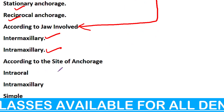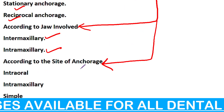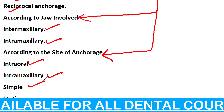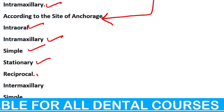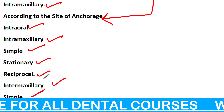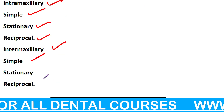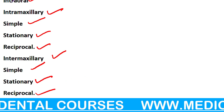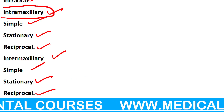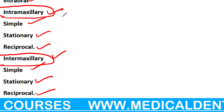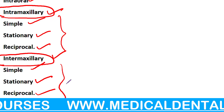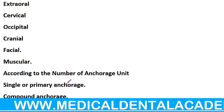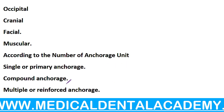फिर site के according: Intraoral है, Intramaxillary है — Simple है, Stationary है, Reciprocal है। Intermaxillary — Simple, Stationary और Reciprocal। इसके अंदर भी दो classification हैं: Intramaxillary और Intermaxillary — इसके अंदर तीन-तीन types आते हैं। फिर Extraoral — Cervical — बहुत सारे अलग-अलग भी आते हैं।